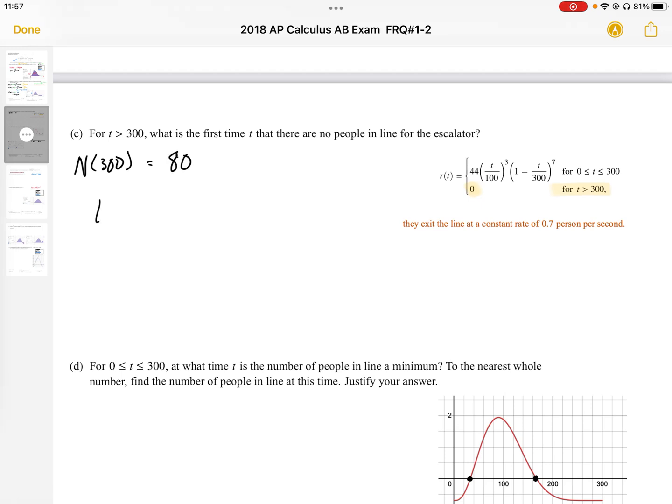The time that it takes for them to leave is just going to be 80 divided by the rate at which they leave, or 0.7 people per second. So there's 80 people divided by 0.7 people per second, which gives us 114.2857 seconds. So that's how many seconds it takes for them to leave, to empty the line after 300 seconds.